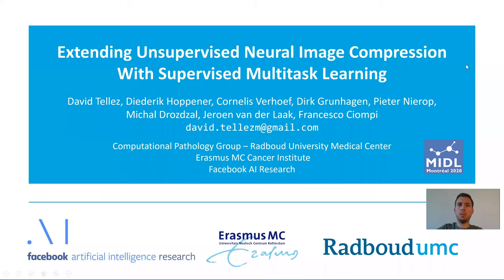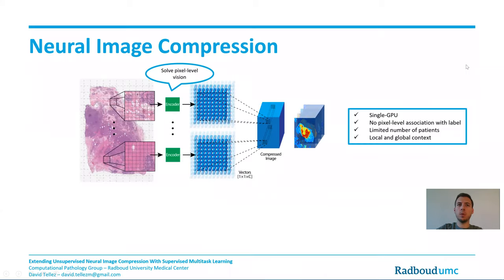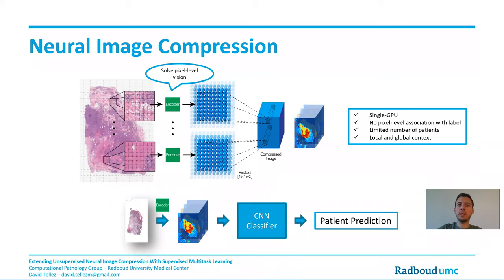Hi everyone and welcome to my one minute teaser. We perform gigapixel image classification using neural image compression. With this method we can extract useful features from the input, drastically reducing its size. After compression, we can train a CNN classifier targeting patient labels like overall survival or other biomarker data.